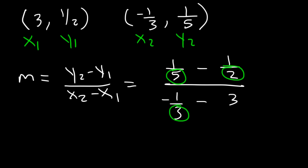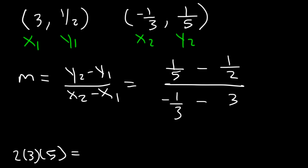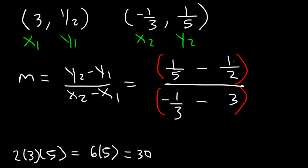What is the least common multiple of 2, 3, and 5? If you're not sure, you can use any multiple — it doesn't have to be the least common multiple. The quickest way to find a multiple that clears away the fractions is to multiply 2, 3, and 5. 2 times 3 is 6, and 6 times 5 is 30. So I'm going to multiply the top and the bottom of the fraction by 30. This will allow me to clear away all small fractions within the larger fraction.